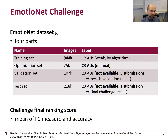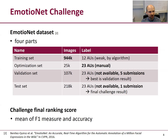The EmotioNet Dataset consists of four parts: the training set, the optimization set, the validation set, and the test set. The training set is by far the largest with 944,000 images, but it was only labeled by an algorithm and only with 12 of the action units, so this is a quite weak label source. The optimization set is quite small — only 25,000 images — but fully labeled with manual labels. The validation and test sets have all labels, but these were not available to challenge participants. Instead, we submitted predictions and got the results, with five submissions allowed for validation and one for the test set.